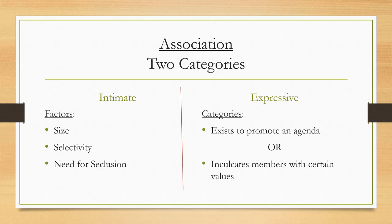If your organization fits into one of these two categories, then the government cannot force you to associate with people you don't want to. Those two categories are expressive associations and intimate associations. If your organization is not an intimate association and is not an expressive association, then tough luck — you're just going to have to comply with the anti-discrimination law, like most private businesses do.